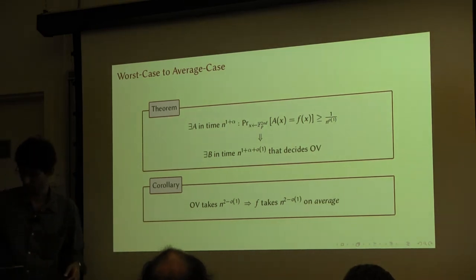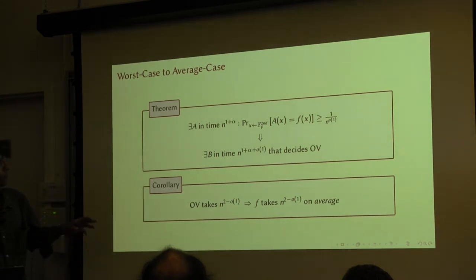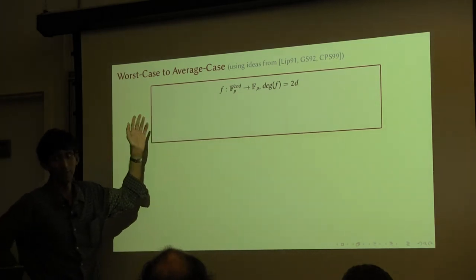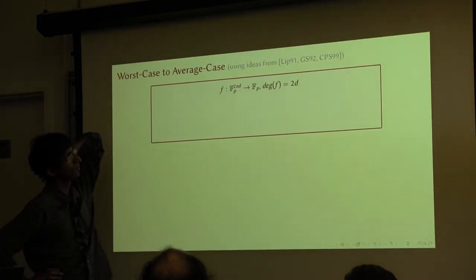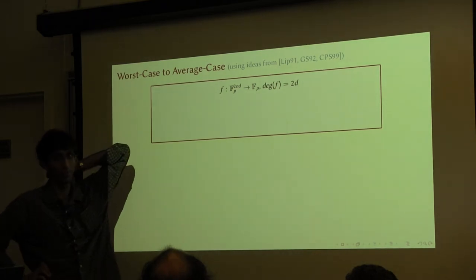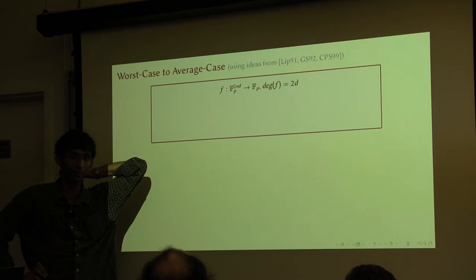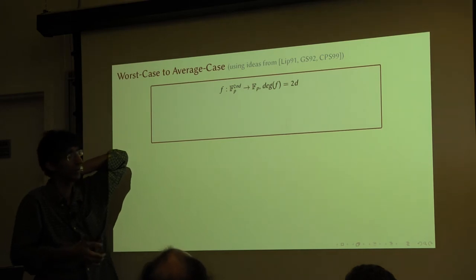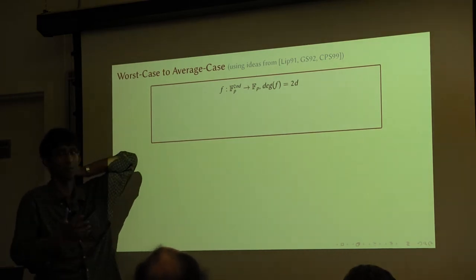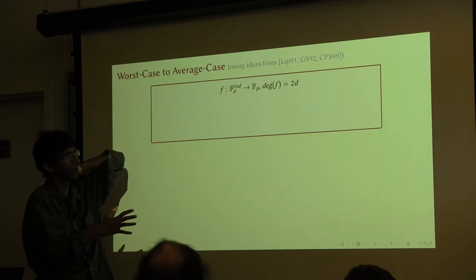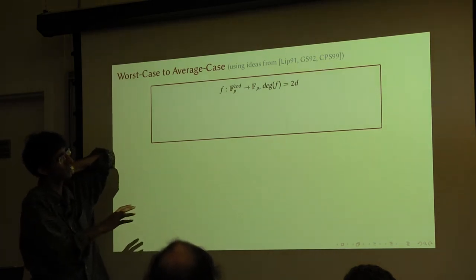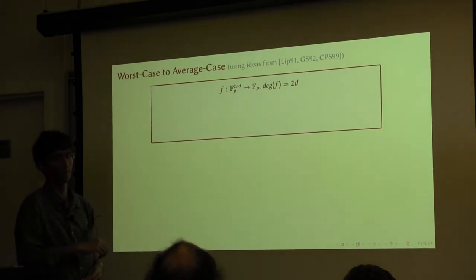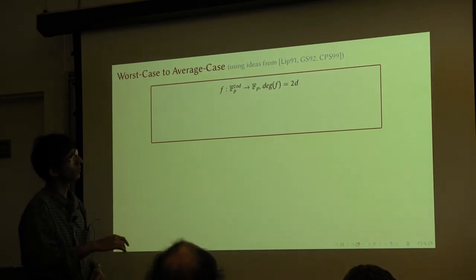So let me show you how to prove the theorem I just stated. It uses certain ideas from the literature on showing similar reductions for the permanent problem. There has been this line of work on showing worst-case to average-case reductions for the permanent, and certain techniques were developed for this and also found use elsewhere. These techniques are related to coding theory — like local decoding of codes, local decoding of the Reed-Muller code and so on.